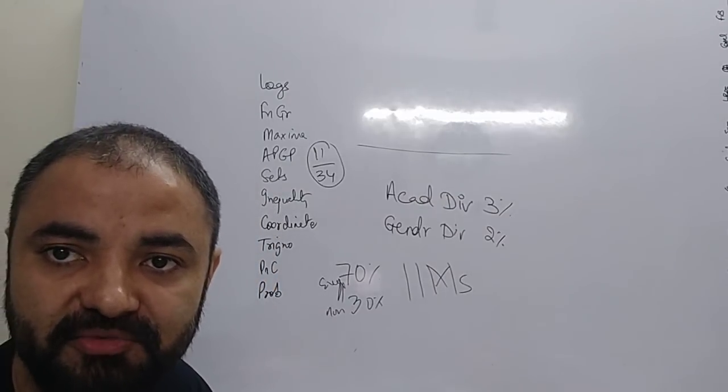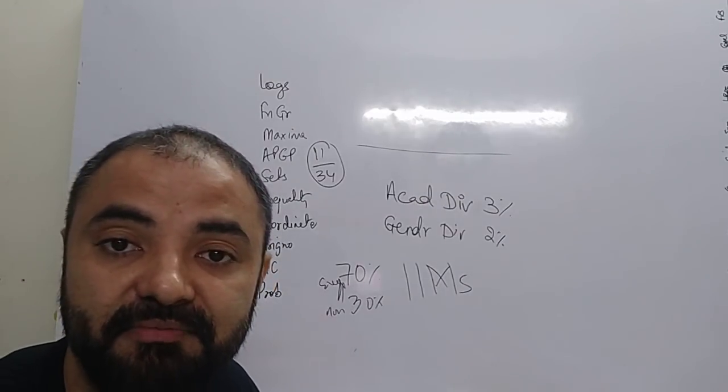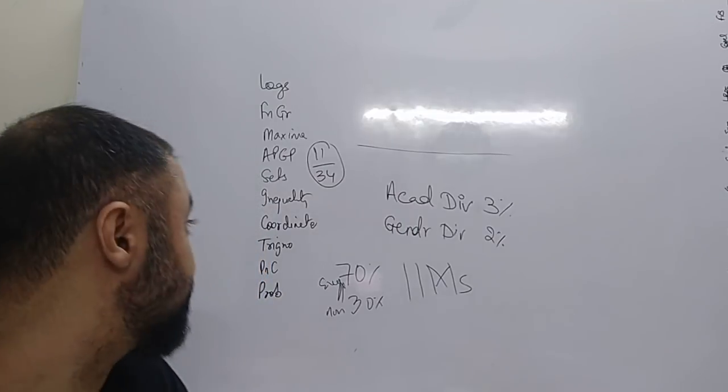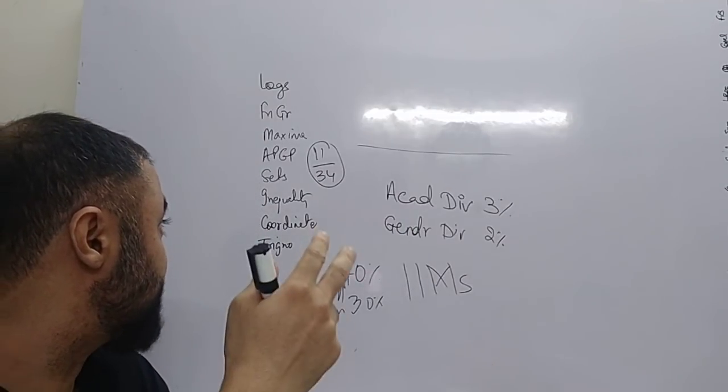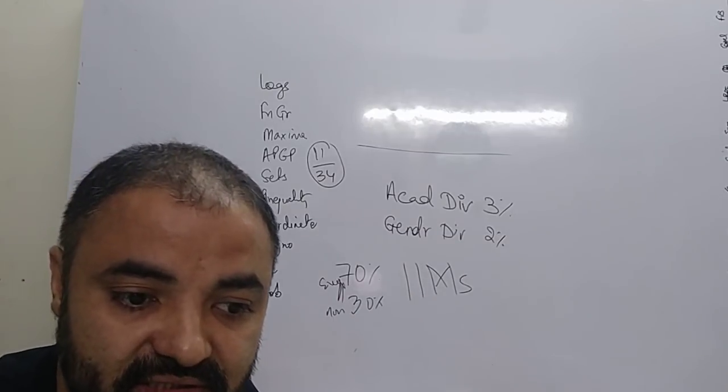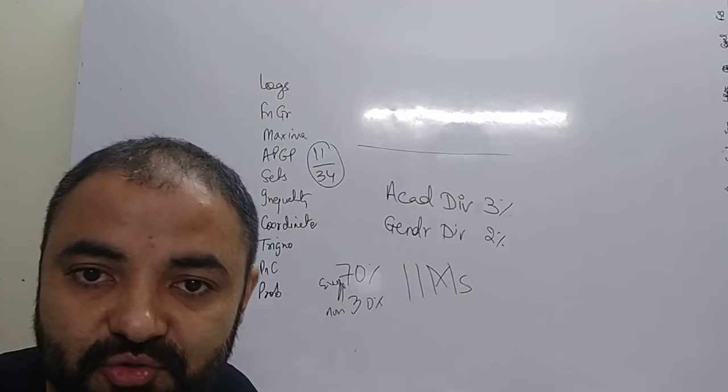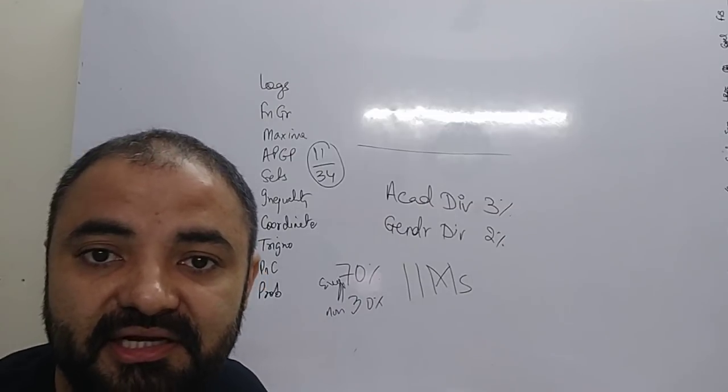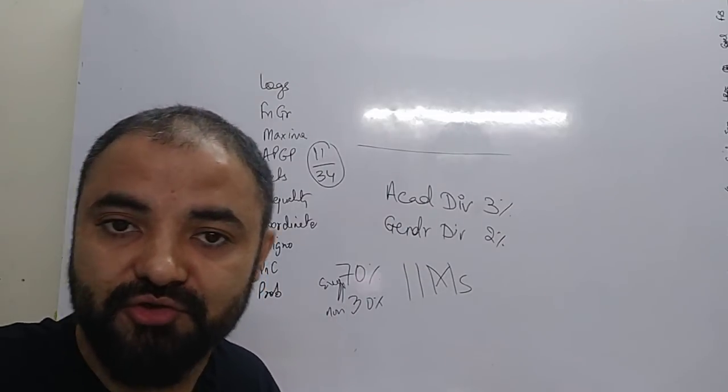if you are a non-engineer, some of these topics you have not seen even in school days. For example, trigonometry, you've seen but not done much. Special inequalities, maximum minimum, function graphs. These are topics you have never seen. So 3 marks per question times 11 questions - 33 marks is something you have to focus on to start with.